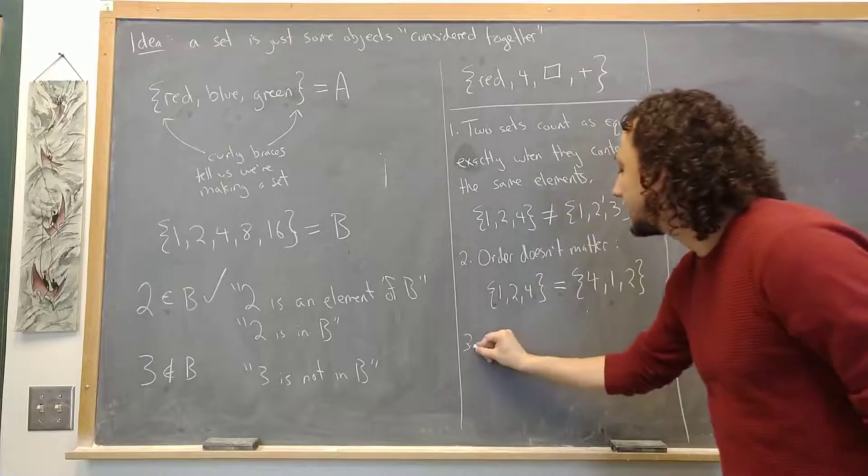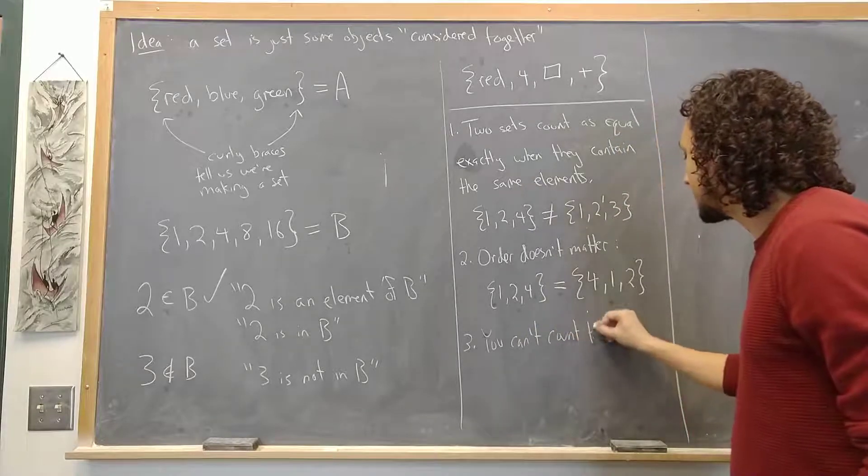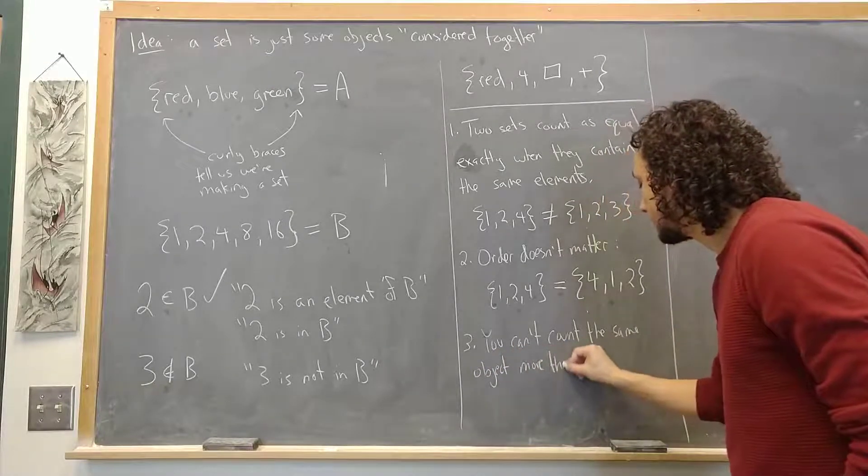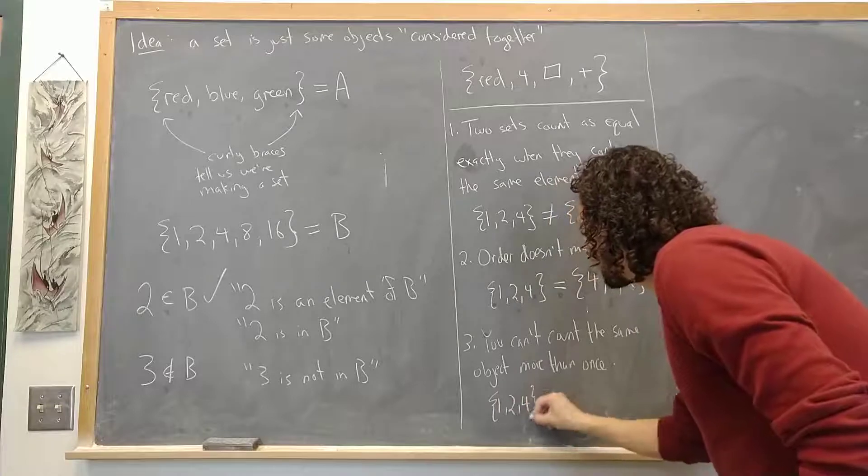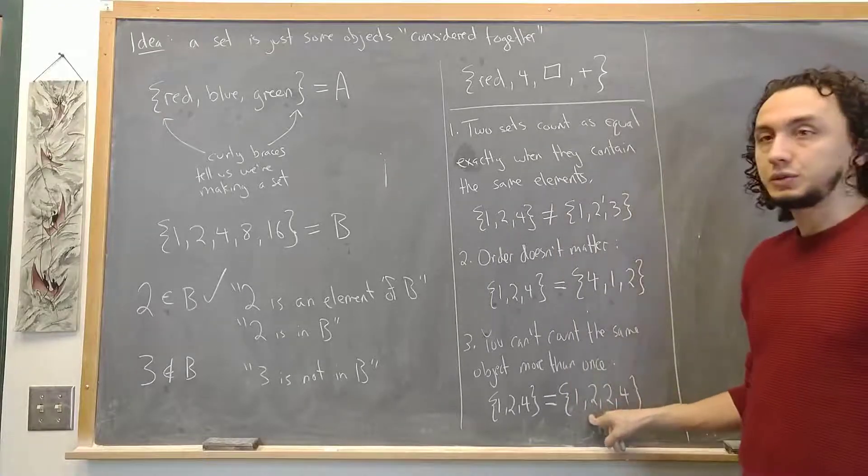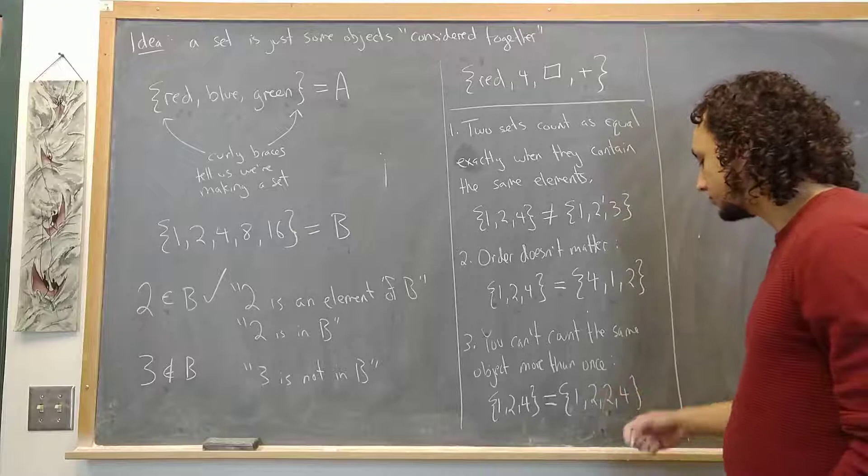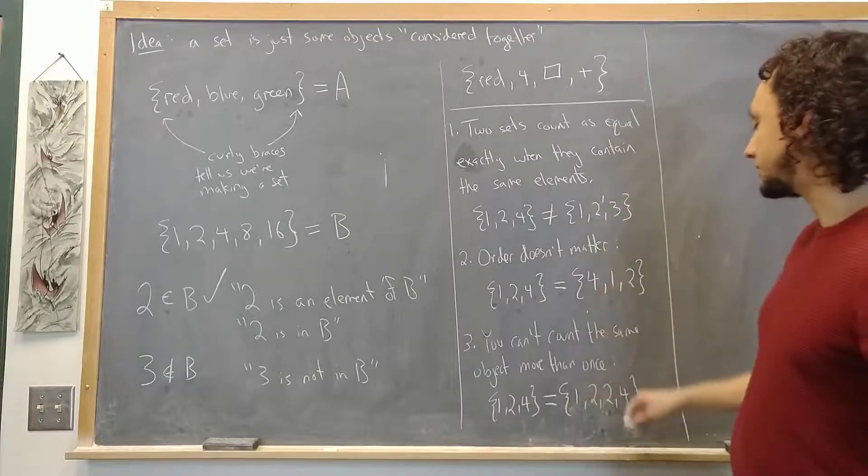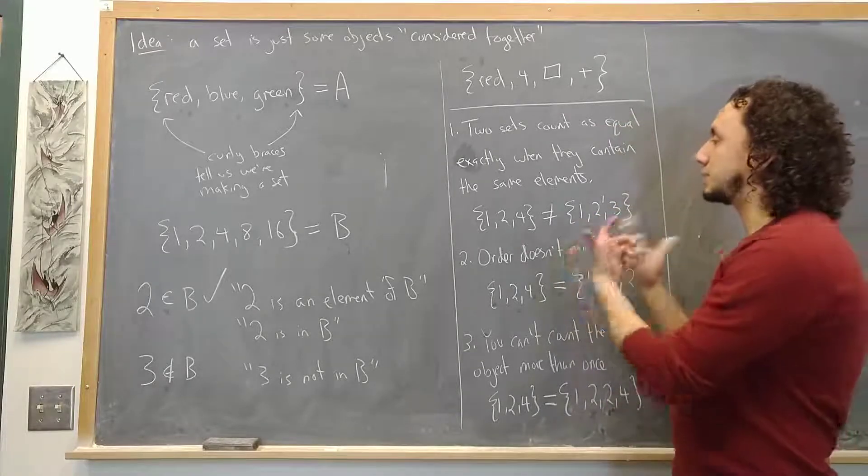And the third point also on these lines is that you can't count the same object more than once. So that's just to say the set that contains 1, 2, 4 counts as the same as the set that contains 1, 2, 2, and 4. Because this fact that I listed 2 twice intuitively does nothing. I'm telling you which numbers are in the set and this is just redundant. I said 2 twice but the numbers in the set are just 1, 2, and 4. There's not like an extra copy of 2 that counts as being in the set. So as far as sets are concerned they don't count copies, they don't care what order, and they're equal exactly when two sets are equal exactly when they contain the same elements.